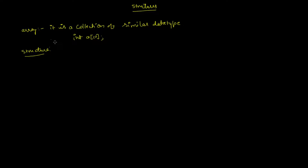For example, within one single structure you can have a character, you can have an integer number, you can have a floating point number, or you can have a double number and so on. You can have a collection of different data types. You can even have pointers in structures.